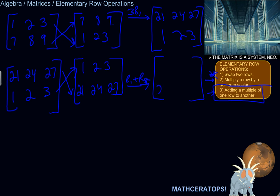So 21 plus 1 is 22. 24 plus 2 is 26. 27 plus 3 is 30. And then row 1 stayed the same, so 1, 2, 3. Okay. Again, let me rewrite that matrix.